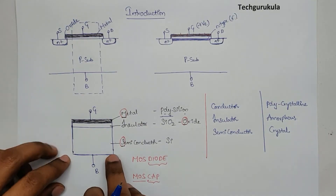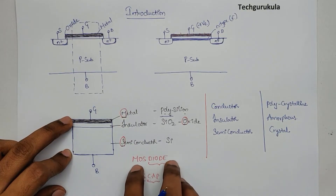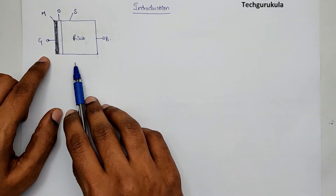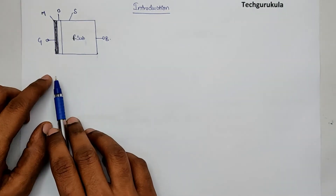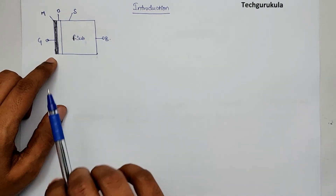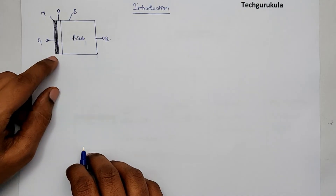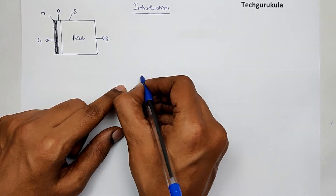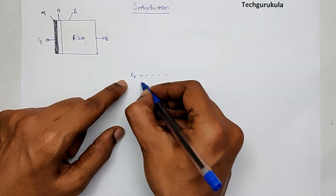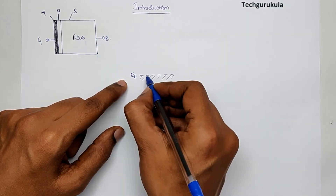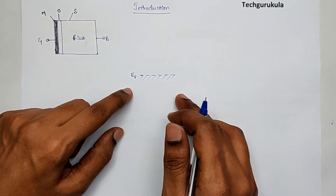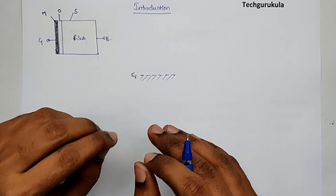The next step is to understand how to draw the energy band diagram of a metal-oxide-semiconductor diode, which is the MOSCAP. This orientation will be used throughout the course for charge distributions, electric fields, potentials, and energy band diagrams. For metal, the energy band diagram is simple and straightforward — we only need to represent the Fermi energy level EF, because in metals, below EF all energy levels are filled with electrons, and above EF there are plenty of vacant states. This is why metals have very little resistance to current conduction.